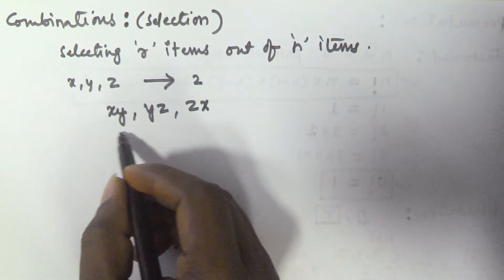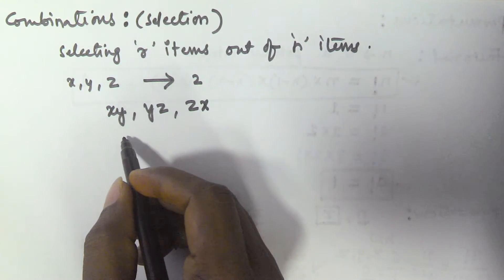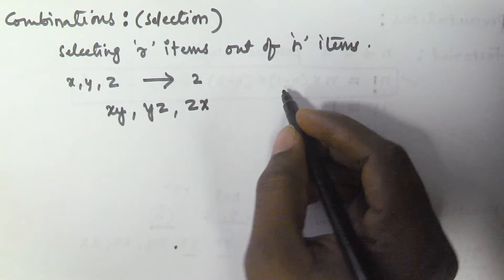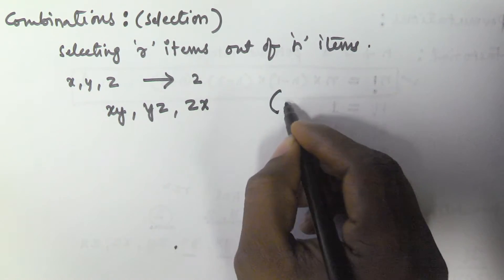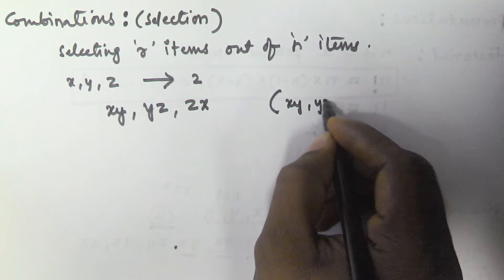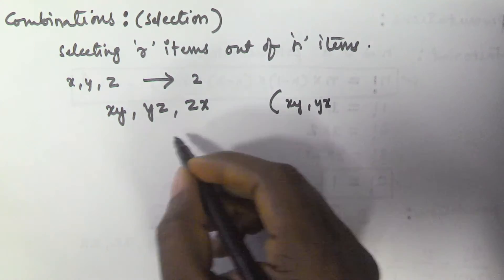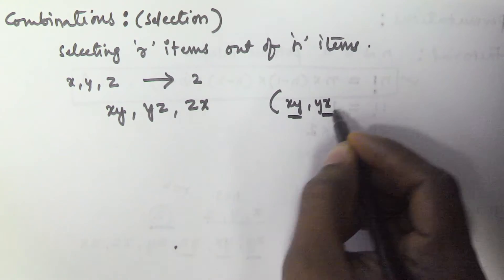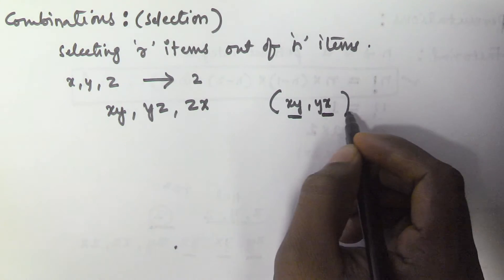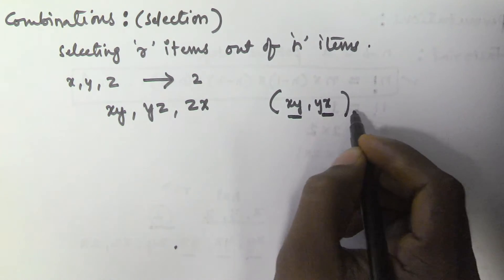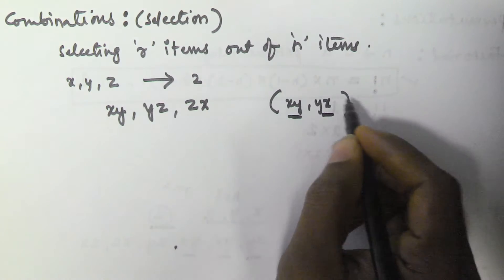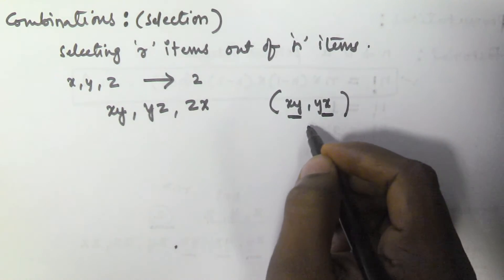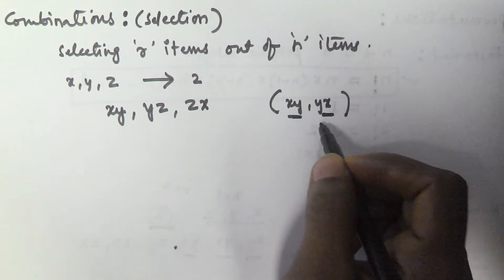Here the order is not important. But when it comes to permutations, the order is very important. In permutations, x,y and y,x are different. But in combination, x,y and y,x are both the same, because the order is not considered in combination.